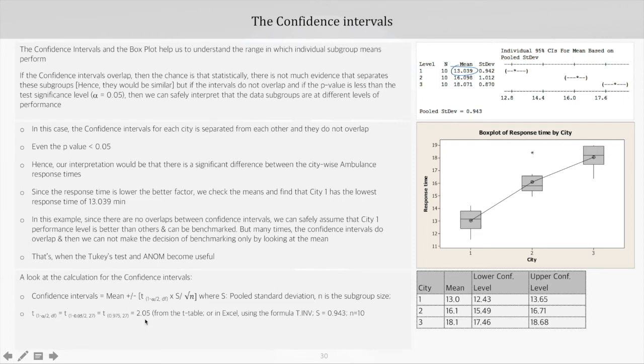So as an example, let's say for City 1, the upper level can be calculated as mean, which is 13, plus the t-stat, which is 2.05, multiplied by s, which is 0.943, divided by square root of n, which is 10. Now that would be 13.65. So that's how this calculation happens, and this is the value corresponding to 13.65. This is the value corresponding to mean, which is 13.65.